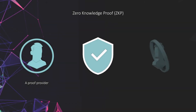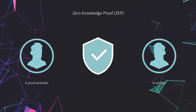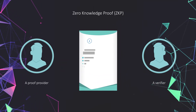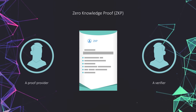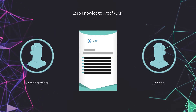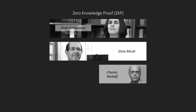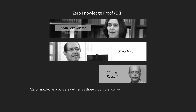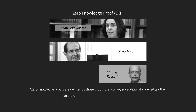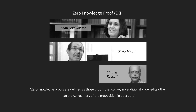Zero-knowledge proof, or ZKP, is a secure protocol between two parties: a proof provider and a verifier. The idea is that a proof provider shows a verifier that a statement is true without giving him any other information. This type of protocol was designed in the 80s by Shafi Goldwasser, Silvio Micali and Charles Rackoff, who defined it as follows: zero-knowledge proofs are defined as those proofs that convey no additional knowledge other than the correctness of the proposition in question.